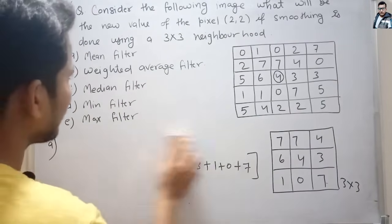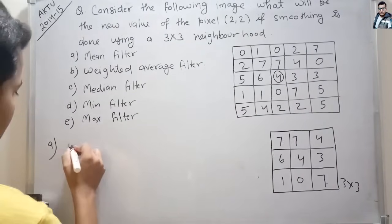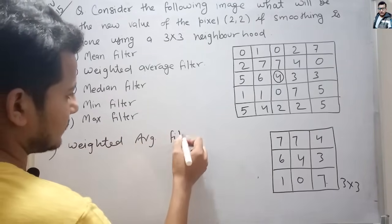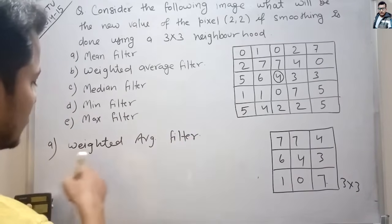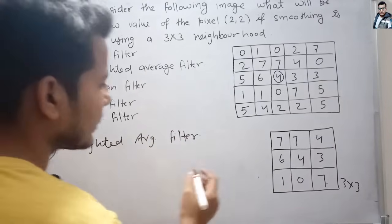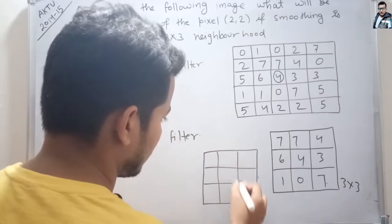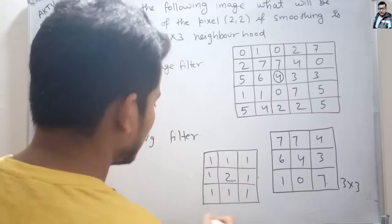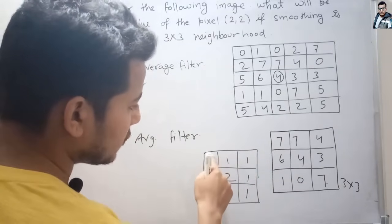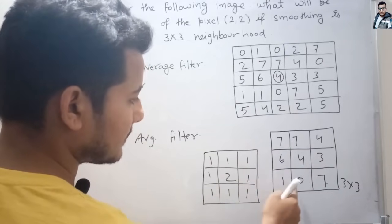Now we will apply the weighted average filter. To apply the weighted average filter, we need a 3x3 structuring element. Let's consider the structuring element where the center pixel has weight 2 and all surrounding pixels have weight 1. So the calculation is: 7x1 + 7x1 + 4x1 + 6x1 + 4x2 + 3x1 + 1x1 + 0x1 + 7x1.